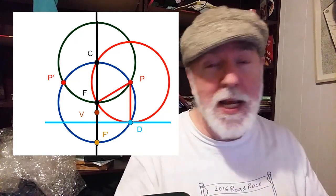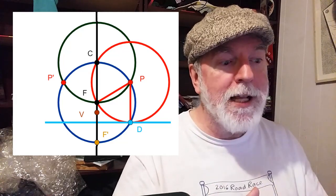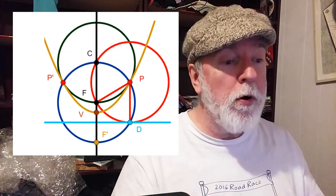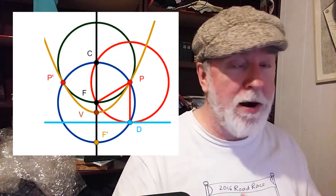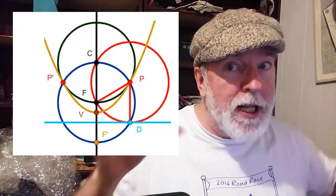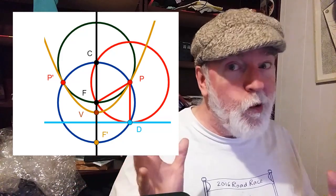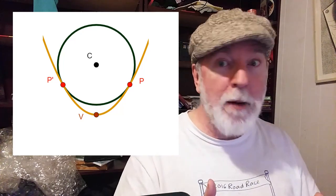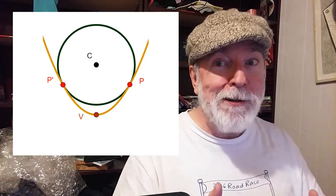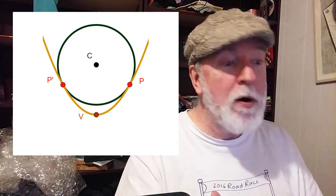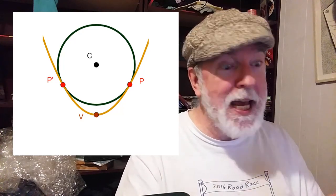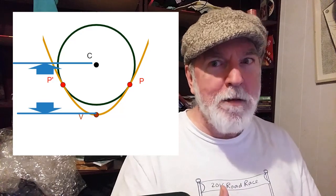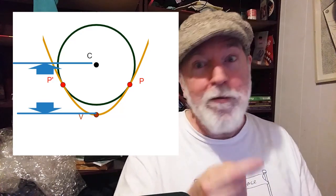Because PF and PD are equal in length, by necessity, that parabola must run through points P and P'. So now we'll take away the baggage, and now we're left with Dr. Pan's circle and parabola, where the circle touches the parabola at points P and P'.